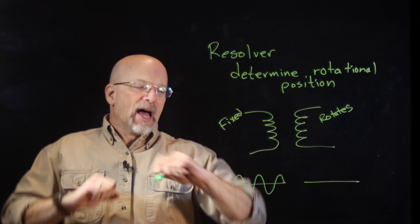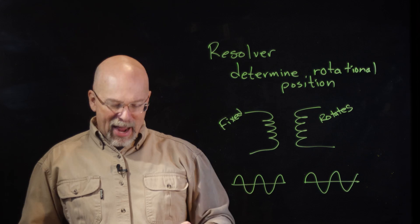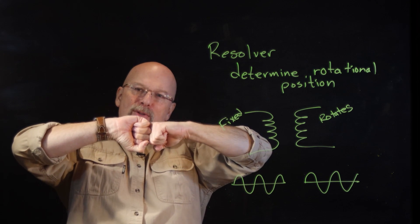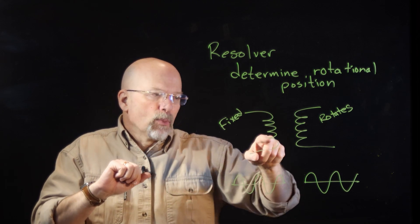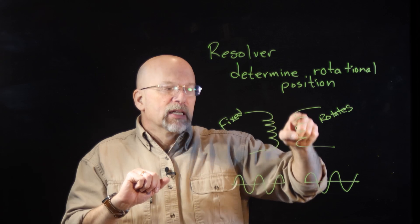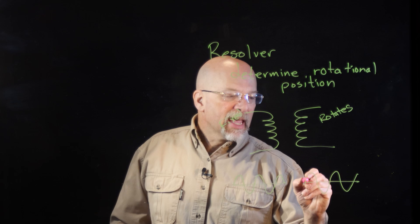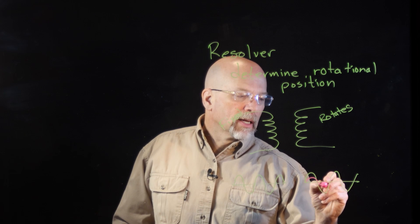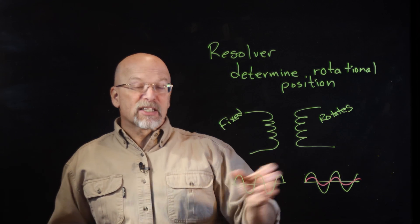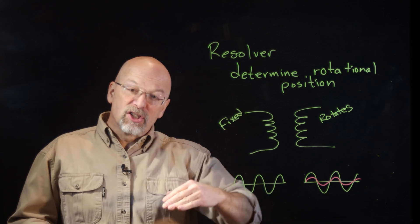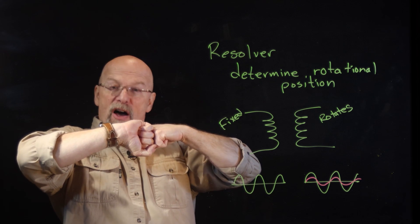Now if they are both lined up, then what you're going to get is a sine wave. Now as the one rotates, it actually is going to stop lining up with the fields, the electromagnetic fields that are being generated by the primary coil. And so as it rotates, its amplitude is going to get less and less and less until it gets to a point where it's down to zero. And what it means when it's down to zero is it means that they are 90 degrees offset from one another.